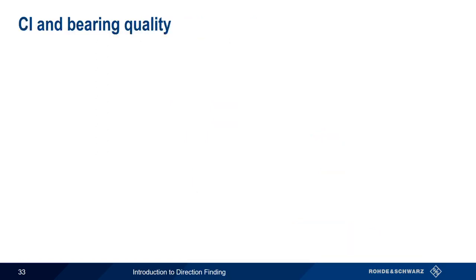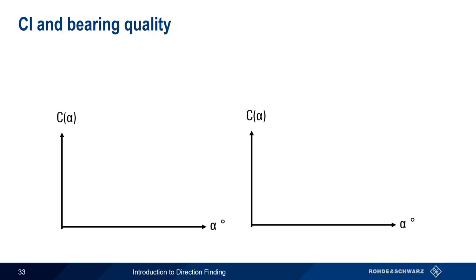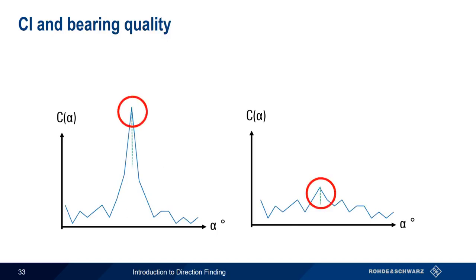Now let's explain the correlative part. When a target signal arrives at our antenna array, we first measure the received phase offsets at each antenna. We then calculate the correlation between our measured phase offsets and the calibrated, or ideal, phase offsets for each arrival angle from 0 to 360 degrees. This process should yield a clear correlation peak, and using this peak we can derive the bearing or arrival angle.